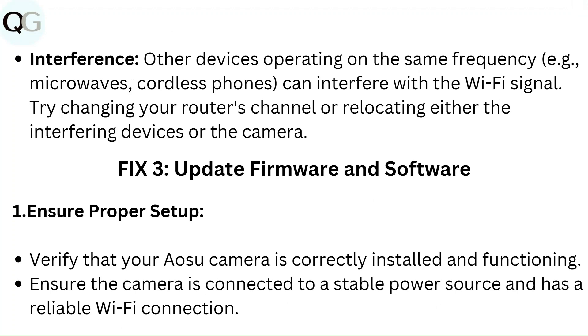Interference: Other devices operating on the same frequency — i.e. microwaves, cordless phones — can interfere with the WiFi signal. Try changing your router's channel or relocating either the interfering devices or the camera.